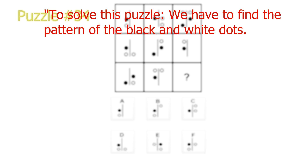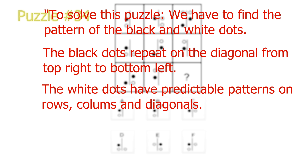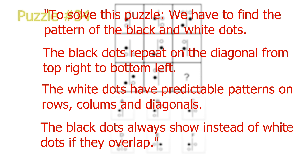To solve this puzzle, we have to find the pattern of the black and white dots. The black dots repeat on the diagonal from the top right to bottom left. The white dots have predictable patterns on the rows, columns and diagonals, but the black dots always show instead of the white dots if they overlap. This black dot priority leads to it being very difficult to find the pattern of the white dots.